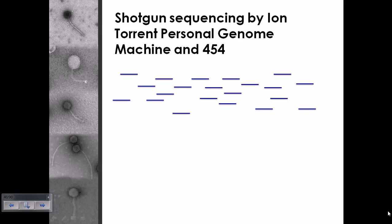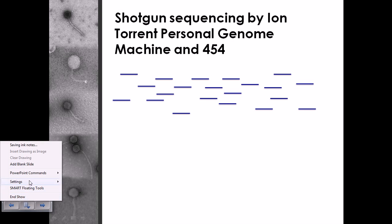In this video we'll be talking about next generation sequencing. One example of next generation sequencing is the ion torrent personal genome machine, and another is 454. Both are genome sequencing machines used to sequence the genome.